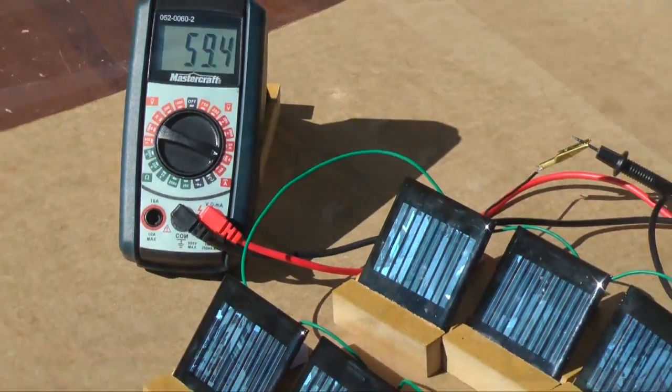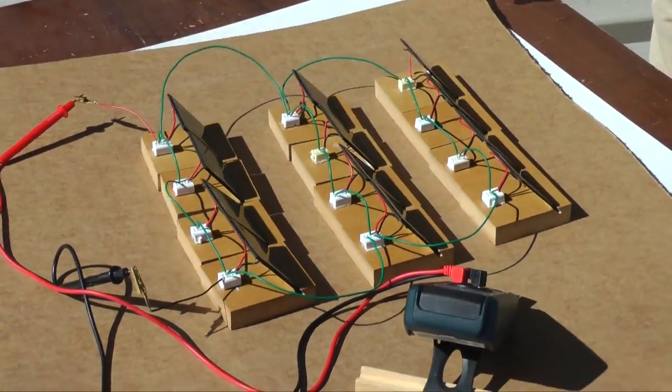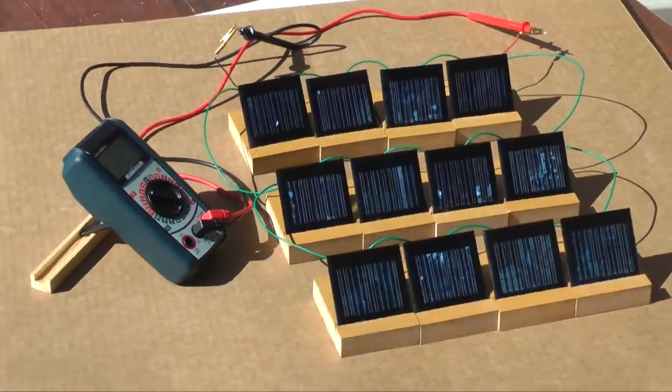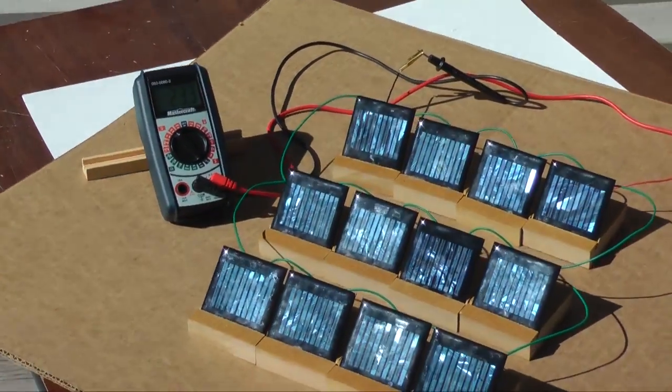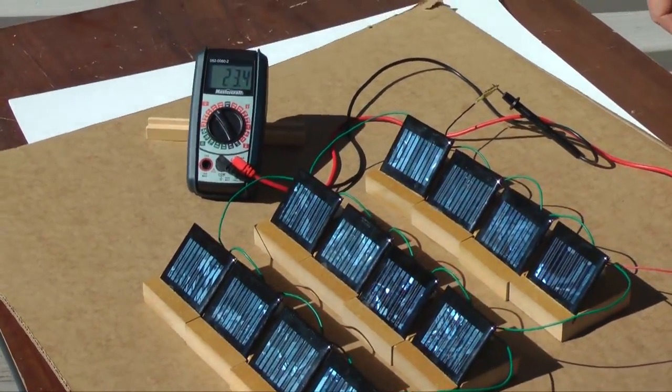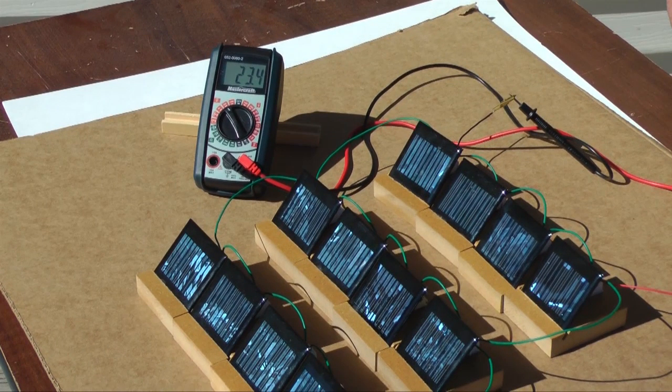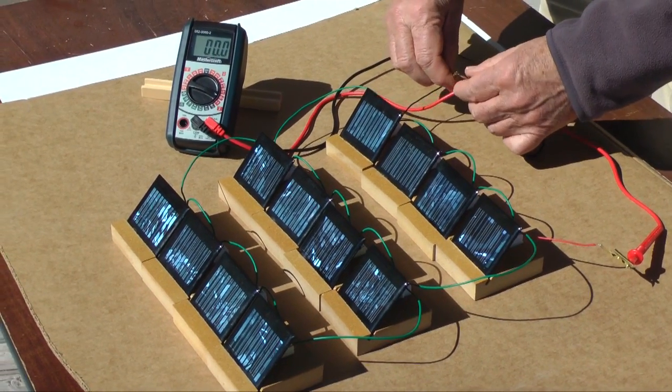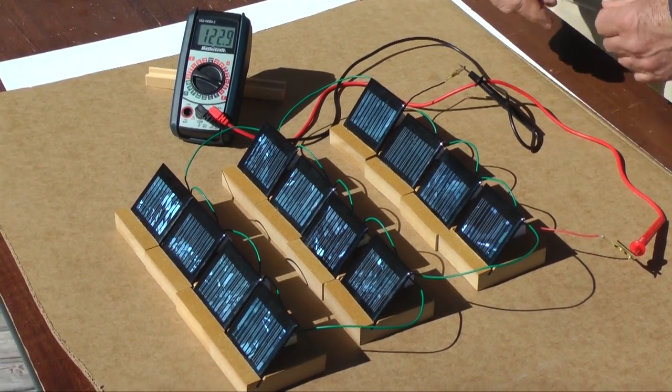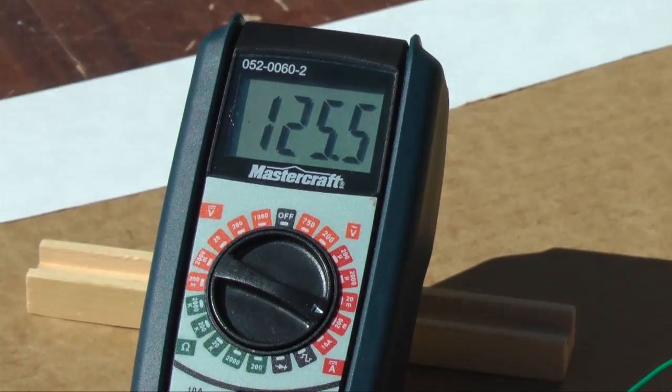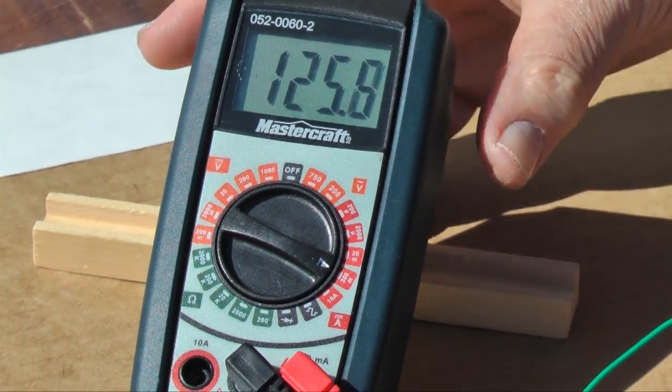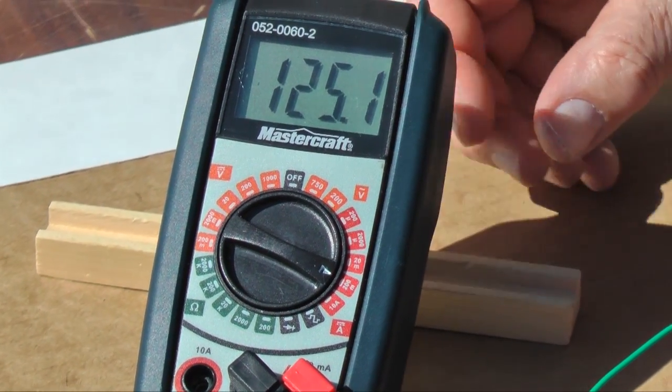It is possible, of course, to take this further. Adding another string, we now have an array with 12 modules. The meter indicates 23.4 volts open circuit. Switching to measure current, our meter indicates this array is now producing well over 100 milliamps. I credit this high value to the improved solar conditions we had while taking this reading: a bright noon sun with a very clear sky.